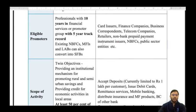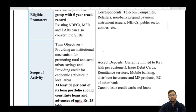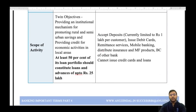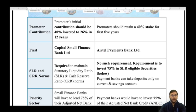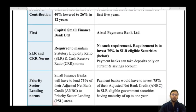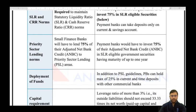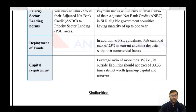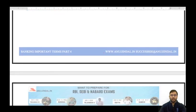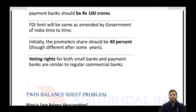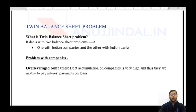There are a lot of provisions here covering eligible promoters, scope of activity, how much the promoter has to contribute, what the first payment banks and small finance banks are, CRR and SLR requirements, priority sector lending norms, where they can deploy funds, and capital requirements. But we're not going into them because the purpose of this session is only to focus on the concepts.